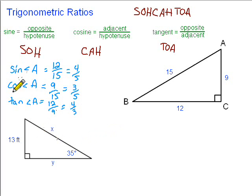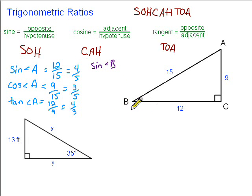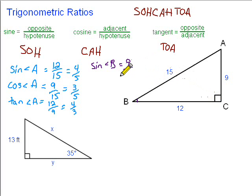So we did the sine, cosine, and tangent of angle A. Now let's look at angle B. Sine of angle B — sine is the opposite over the hypotenuse. Now we're sitting at angle B, so the opposite side in this case is going to be the 9. And remember, the hypotenuse never changes — that's the one across from the right angle, which is still 15. So 9 over 15, which simplifies to 3 over 5.